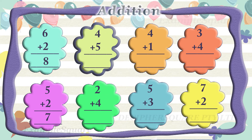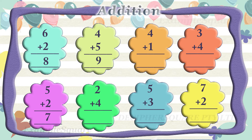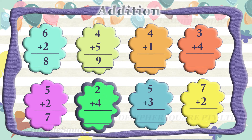What is four plus five? Four plus five equals nine. What is two plus four? Two plus four equals six.